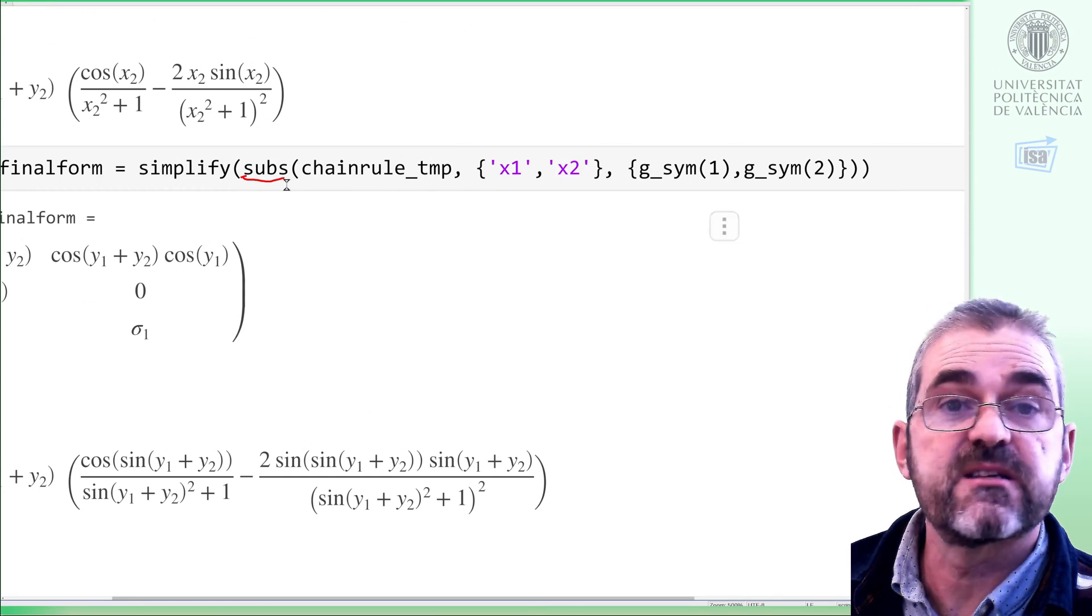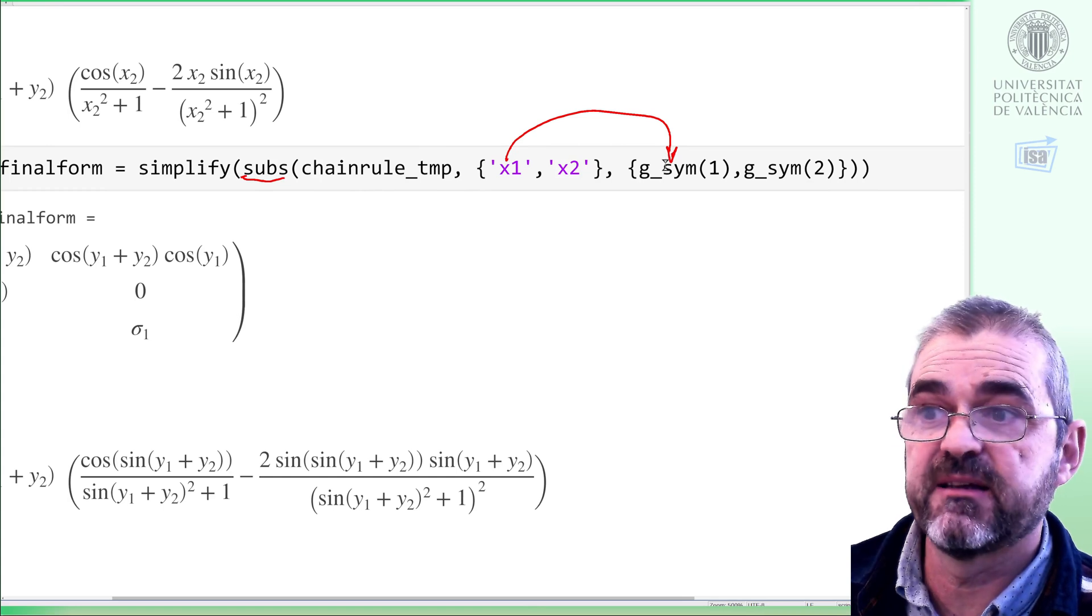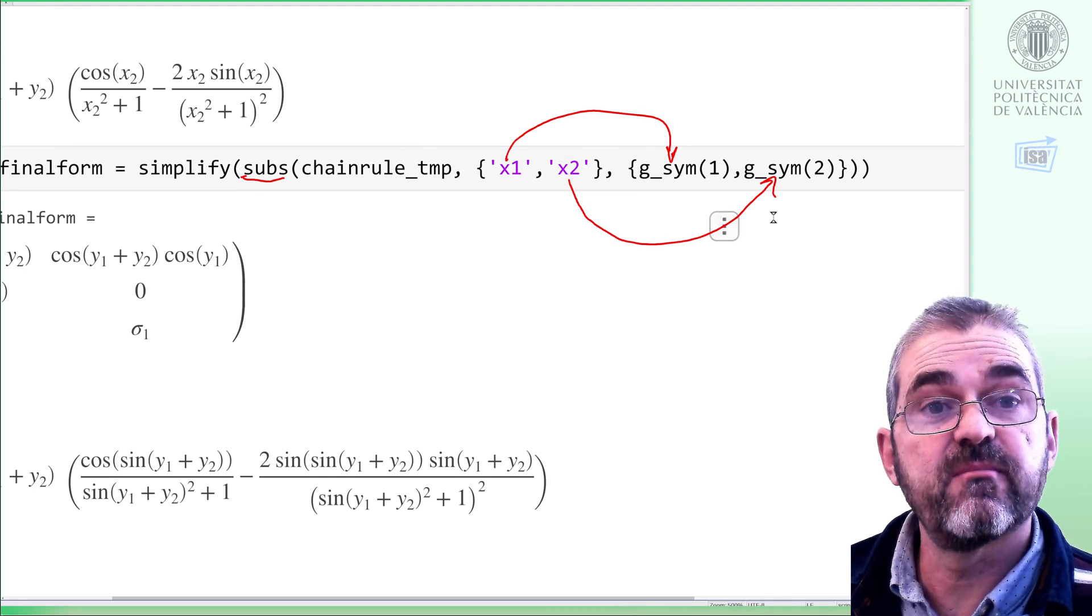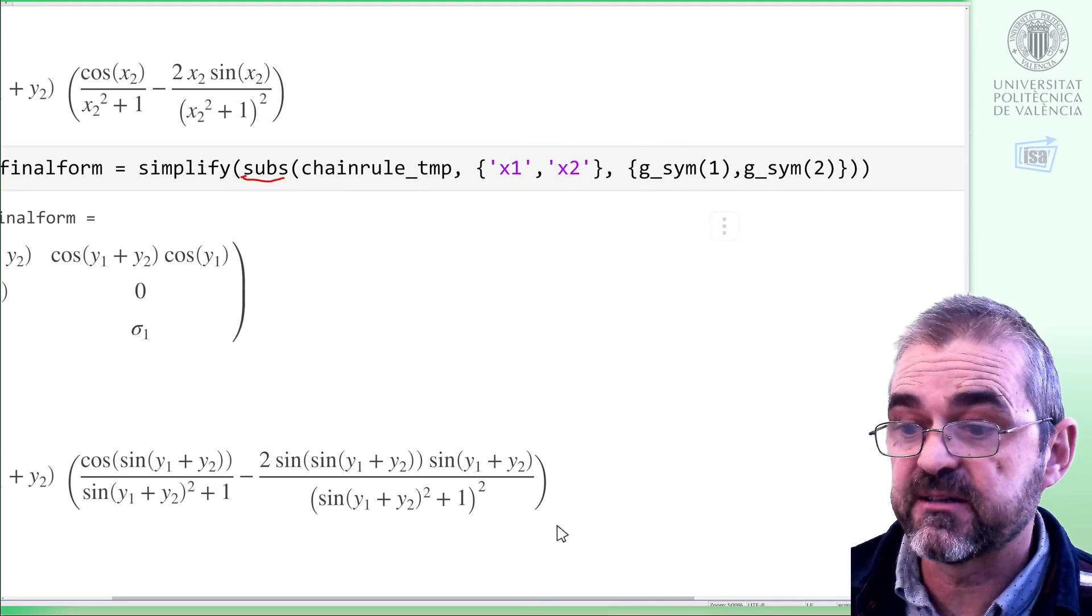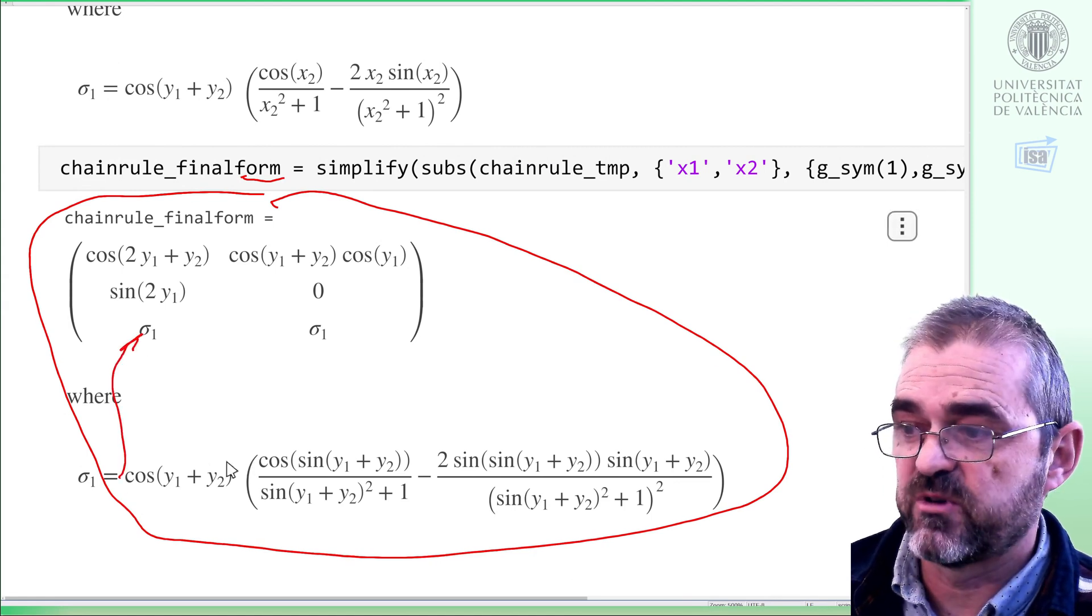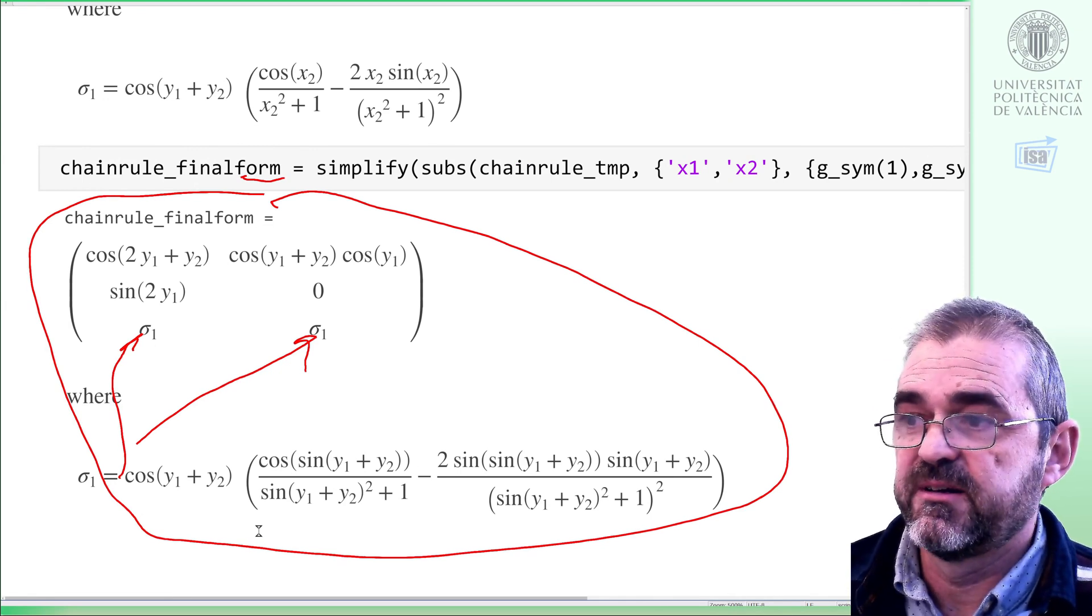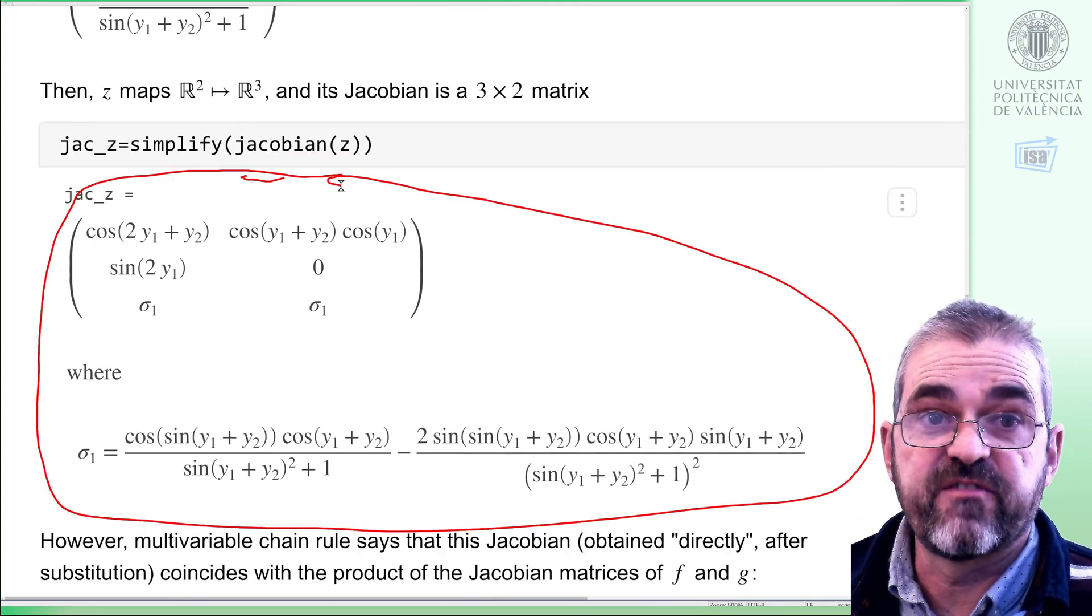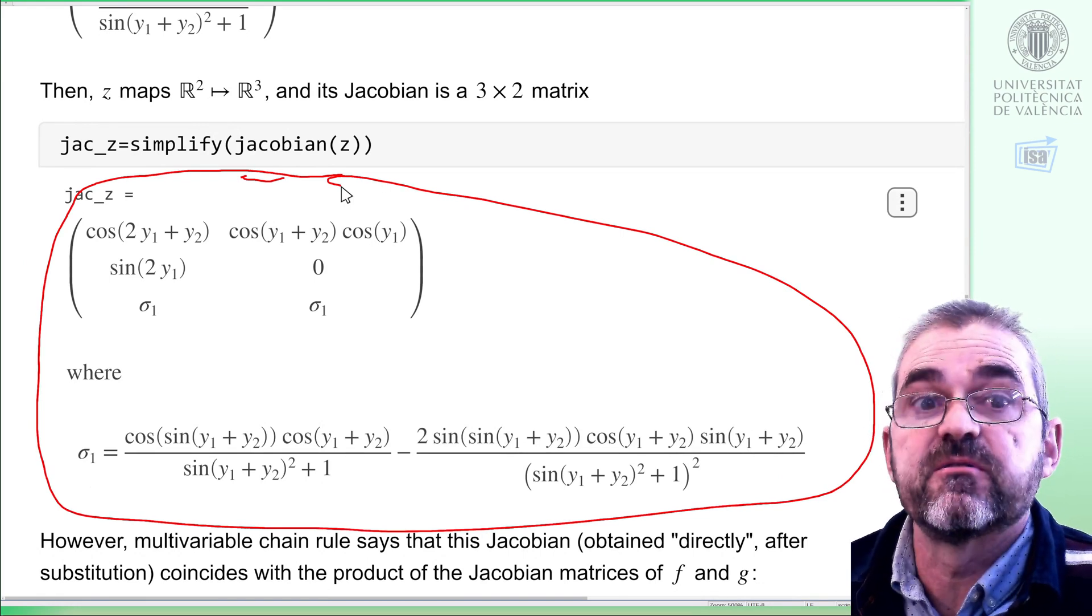So, with command subs, I substitute, and when I see x1, I actually replace it by the first output of g, and when I see x2, I replace it by the second output of g. Then, we have applied chain rule correctly, and this chain rule final form, all this stuff, with this sigma1, actually amounts to this horrible expression. Well, this chain rule final form is actually the Jacobian of the function computed without considering that it was f and g, just substituting before taking derivatives.